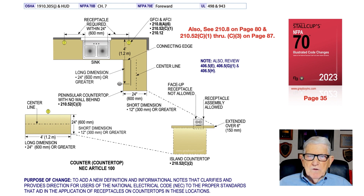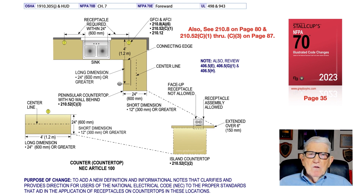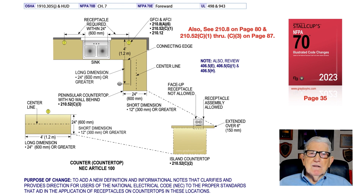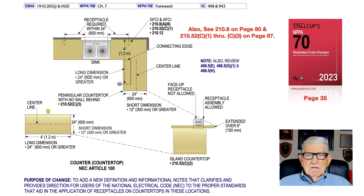This illustration deals with countertops in accordance with NEC Article 100, approximately page 35. You should review 210.52 C1 through C3 on page 87 to see where receptacles are required to be installed. For GFCI protection, see 210.8A for dwelling units and 210.8B for other locations, on page 80. This new definition was added to define a countertop — which has a wall behind it — a peninsula — which has no wall but connects to a countertop — and an island.